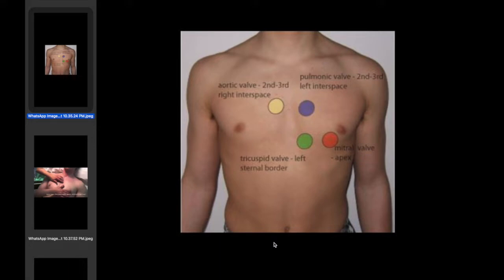Salam alaikum. Today we talk about the cardiovascular system examination. First of all, we have to introduce ourselves to the patient, take permission, and explain the steps of the examination to the patient. We start with inspection, looking for breathlessness and cyanosis.